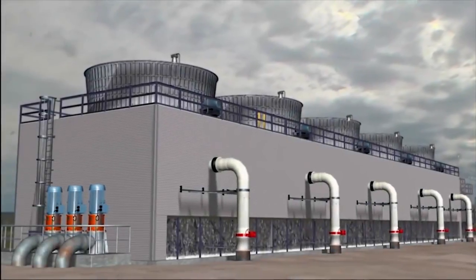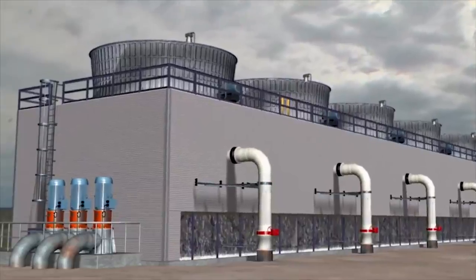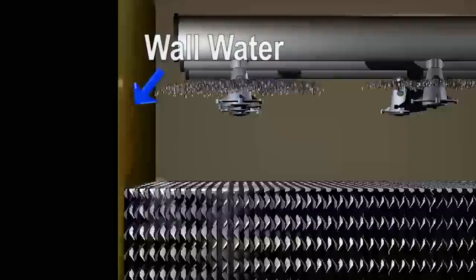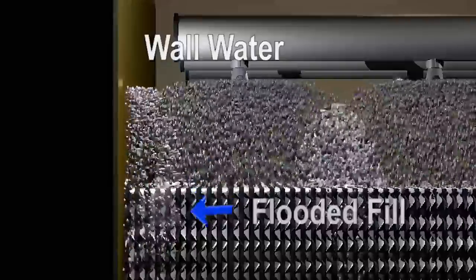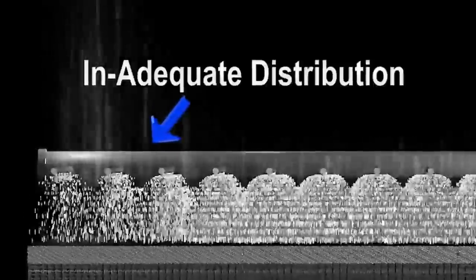Almost all of today's counterflow cooling towers have the same three problems that significantly downgrade their performance. Uneven water loading as a result of overlapping circular nozzles. Excessive wall water as a result of using circular nozzles and inadequate water distribution systems.